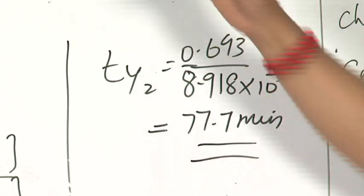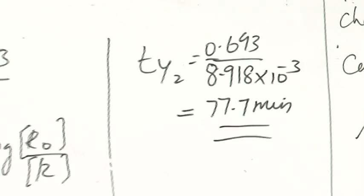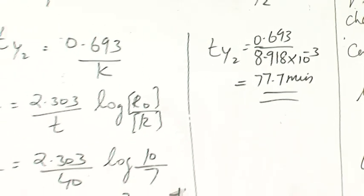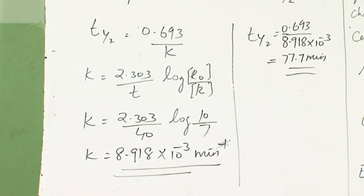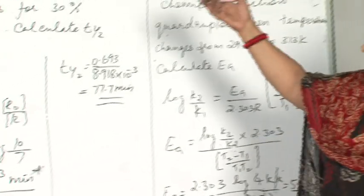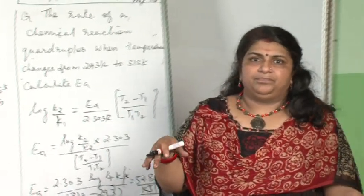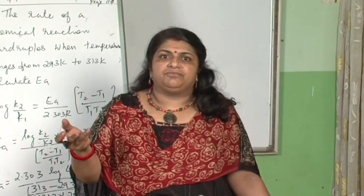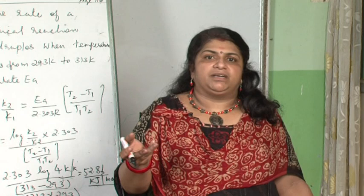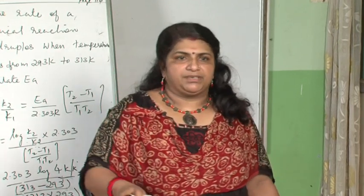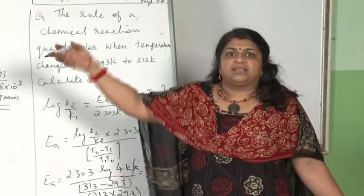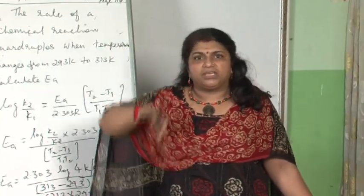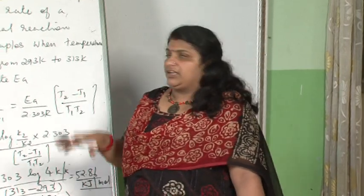Similar questions: a first order reaction 40 percent complete in 20 minutes, 20 percent complete in 80 minutes. Many questions are asked. Sometimes they club two different reactions: a first order reaction 30 percent complete in 20 minutes, how long will it take for 40 percent to complete. In that case, calculate k. Since k is constant for both equations, substitute and you get the value.